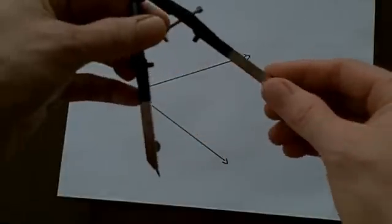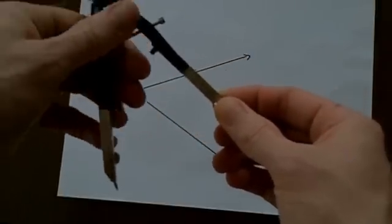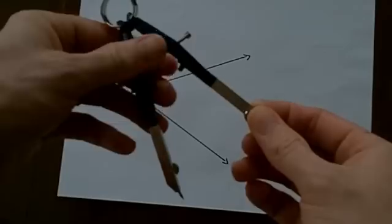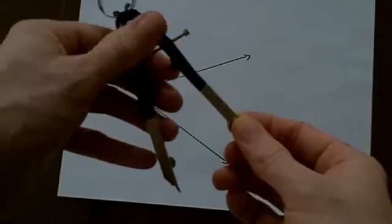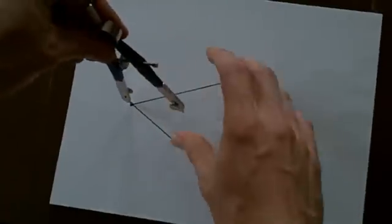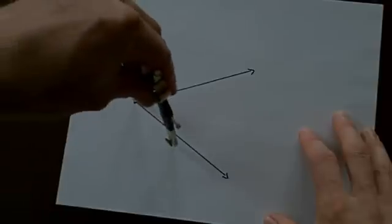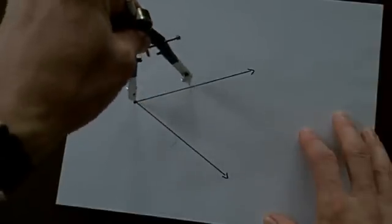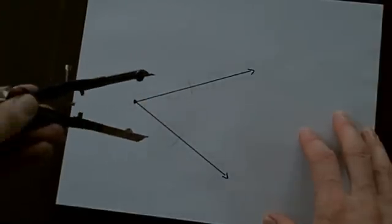And so what we can do is to take this. We don't need it to be nearly as large. But we'll start at the vertex of this angle, and draw marks here over top of that angle.